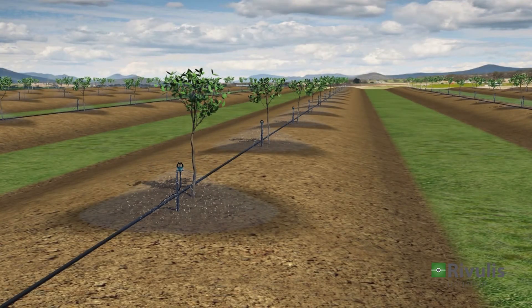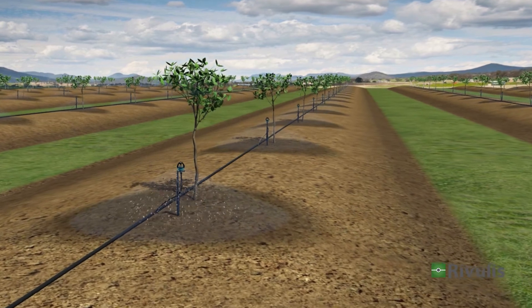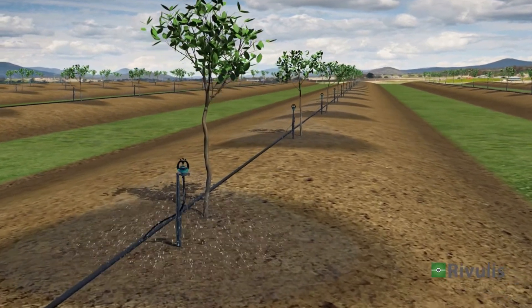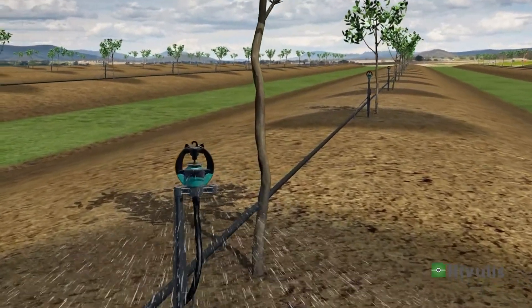For young trees, the microsprinkler spinner can be used with a range limiter to allow for a smaller wetting diameter around the trees.